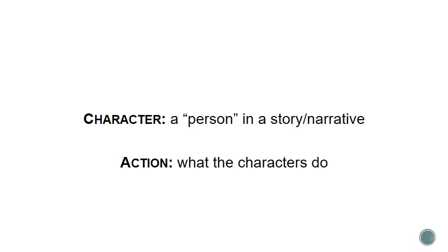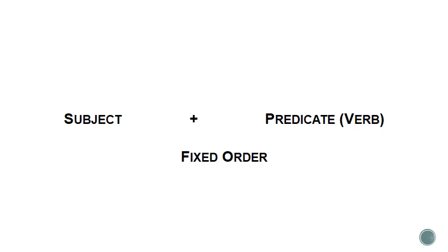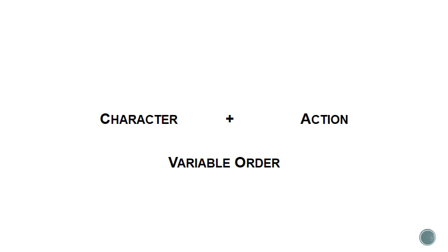The trick is making sure your characters and your actions are complementary to your subjects and predicates. Subject and predicate have a fixed order — this is essentially a grammatical rule about the normal structure of sentences in English. The subject goes first, then the predicate. However, character and action, because those are storytelling elements and not grammatical elements, can go in any order. Characters and actions can go anywhere in a sentence — they're not tied to the grammatical structure in any way.